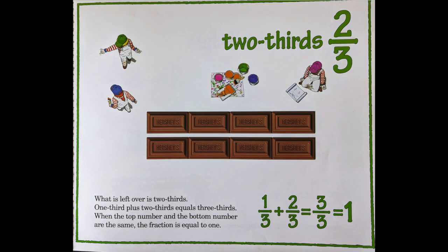Two thirds. What's left over is two thirds. One third plus two thirds equals three thirds. When the top number and the bottom number are the same, the fraction is equal to one.